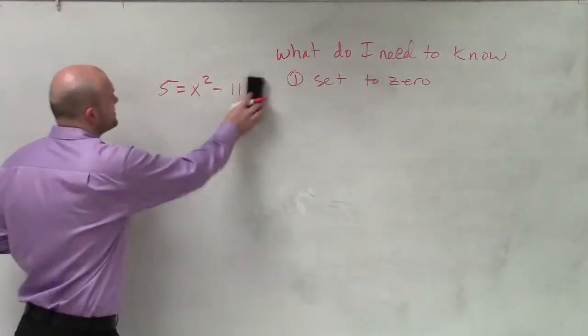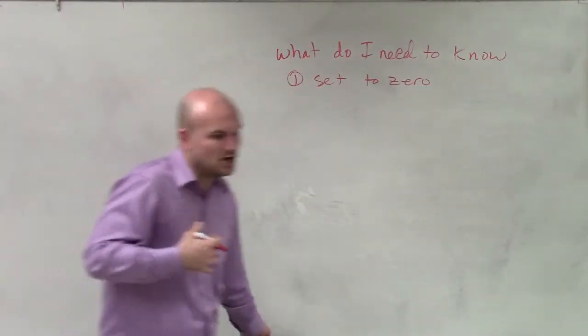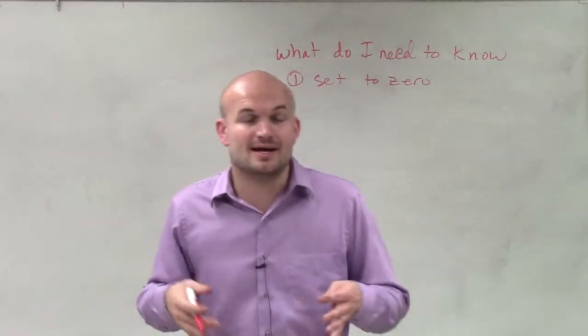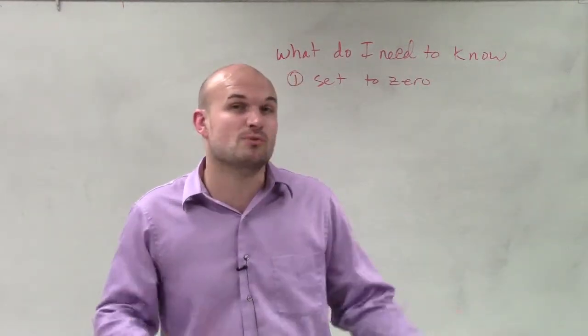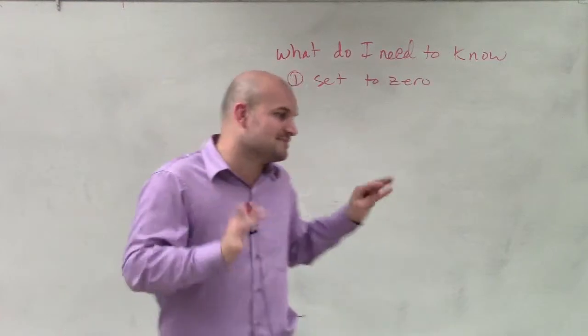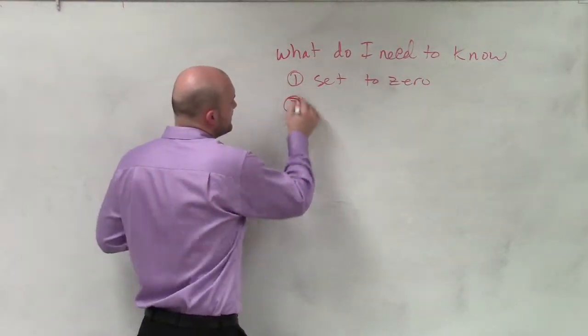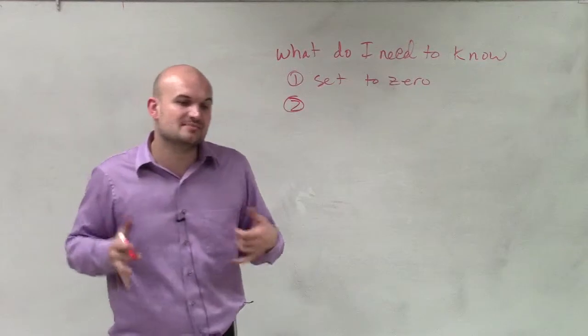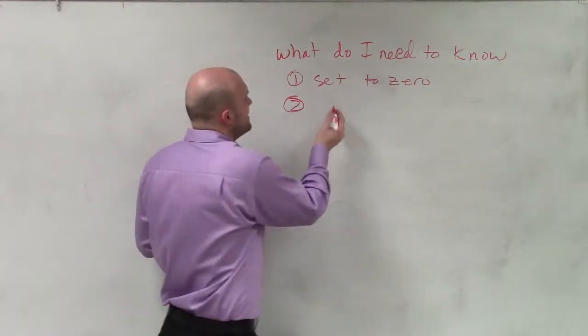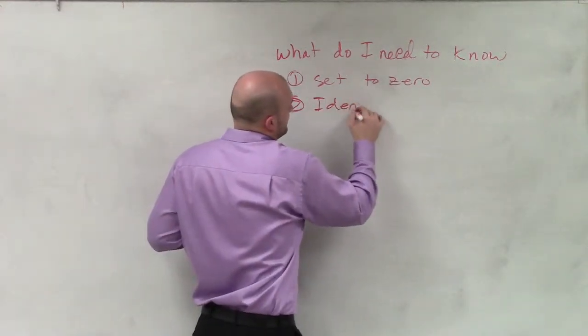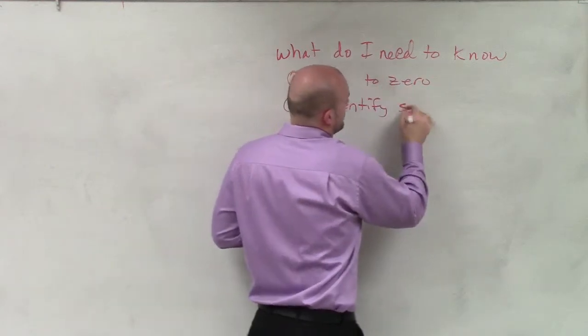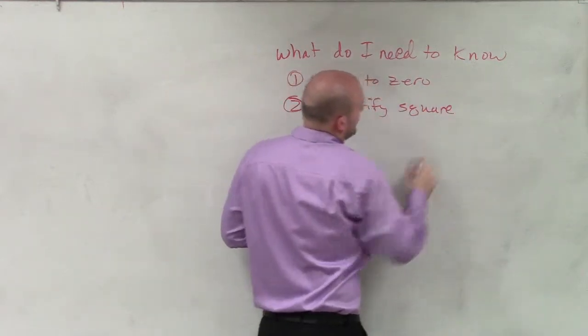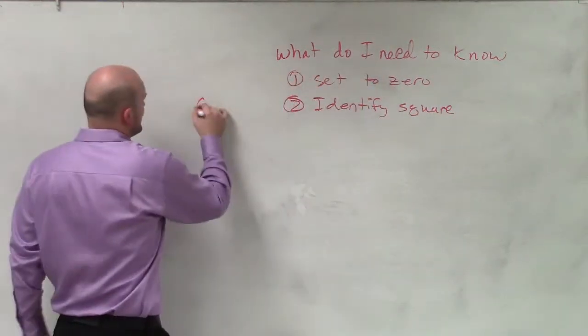Now a lot of times we can solve by the difference of two squares by sometimes using the square root method, but when we're setting these up, difference of two squares is very common and sometimes easier to look at when we can identify square terms, right? Because remember, the difference of two squares,